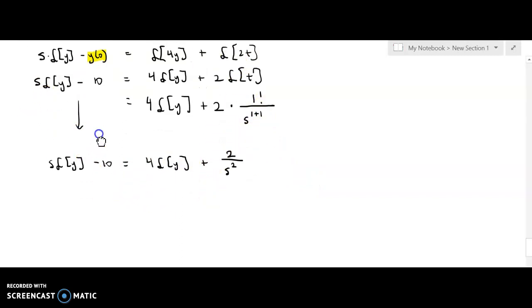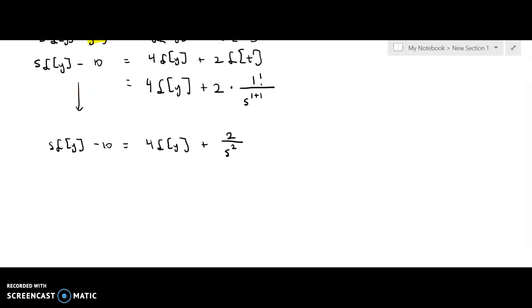The next thing that I want to do is I want to run step 2, which is to isolate the Laplace of y. Now that I have everything expanded as far as I can, I'm going to move 4 Laplace of y to the left. So I'll have s Laplace of y minus 4 Laplace of y. Now I'm going to move the negative 10 to the other side because I want to isolate Laplace of y. So 2 over s squared plus 10. And now I'll factor out a Laplace of y. Remember Laplace of y is just a symbol. So it's just like solving for x. And that equals 2 over s squared plus 10. My last step in this portion is to divide by s minus 4. So I have Laplace of y equals 2 over s squared divided by s minus 4 plus 10 over s minus 4.